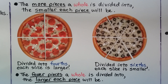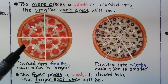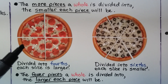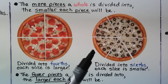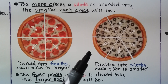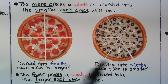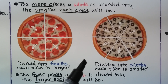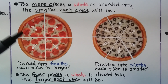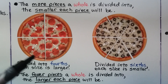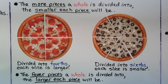The more pieces a whole is divided into, the smaller each piece will be. This pizza is cut into fourths — divided into fourths, each slice is larger than if divided into six. When divided into six pieces, each slice is one-sixth and is smaller. The fewer pieces a whole is divided into, the larger each piece will be.